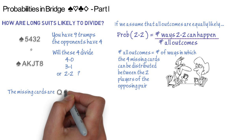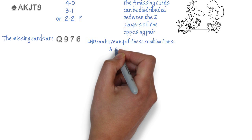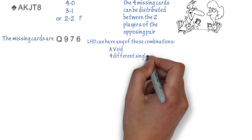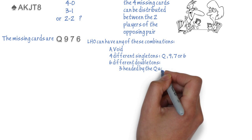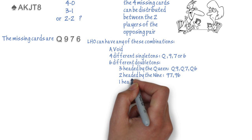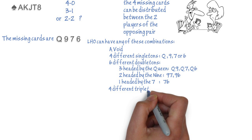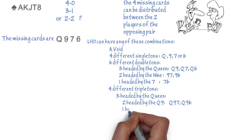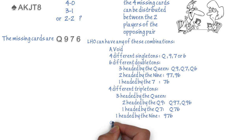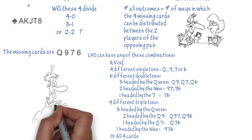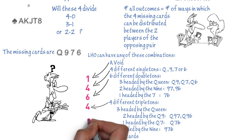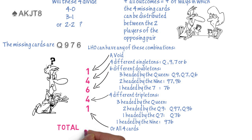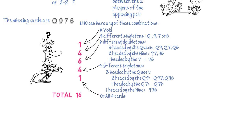The missing cards are Queen, 9, 7, and 6. The left hand opponent can have any of these combinations: a void; 4 different singletons — Queen, 9, 7, 6; 6 different doubletons — 3 headed by the Queen, 2 headed by the 9, or 1 headed by the 7; 4 different tripletons — 3 headed by the Queen, 1 headed by the 9; or all 4 cards. In total, there are 16 possible ways in which 4 cards can be distributed between 2 players.